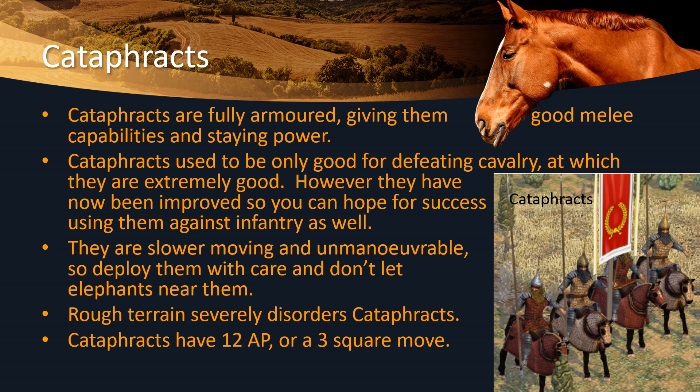The last type of horse troops are the cataphracts or cataphractoid. Cataphracts are fully armoured, which gives them really good melee capabilities and staying power. They're also usually superior and they have lances, so they used to be only good for defeating cavalry — and were very good at that — but now they've been improved so you can use them with some success against infantry as well. However, they are slower moving and unmanoeuvrable, so you have to be careful where you place them at the start of the game. Don't let them get near elephants, because elephants ignore all that armour. Rough terrain also severely disorders cataphracts, and they only have a three-square move.